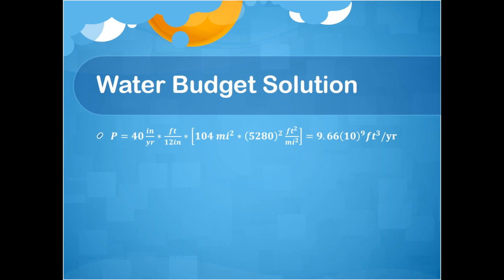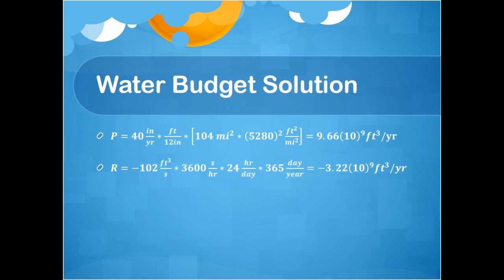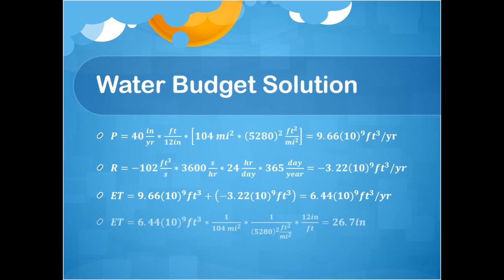Now we have everything needed to complete the water budget calculation. Start by converting precipitation from inches per year to cubic feet by multiplying the watershed area by the average precipitation, including conversions from inches to feet and from square miles to square feet. Next, convert stream discharge from cubic feet per second to cubic feet per year. Then calculate evapotranspiration as precipitation minus stream discharge. We can also report evapotranspiration in inches over the watershed by dividing the ET volume by the watershed area.